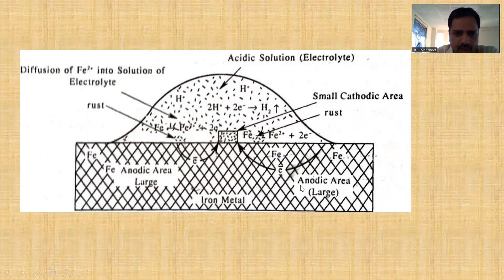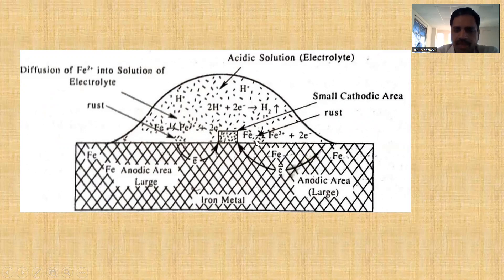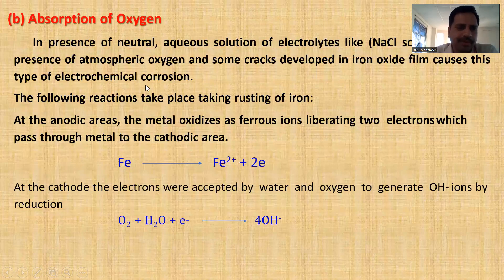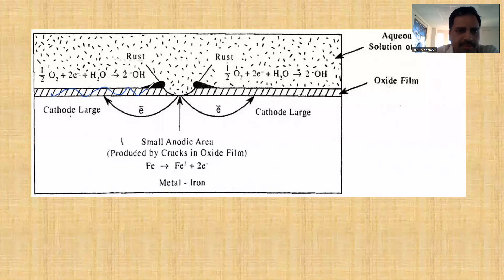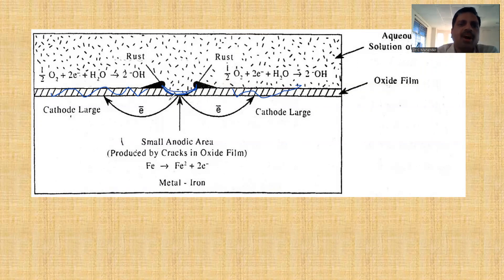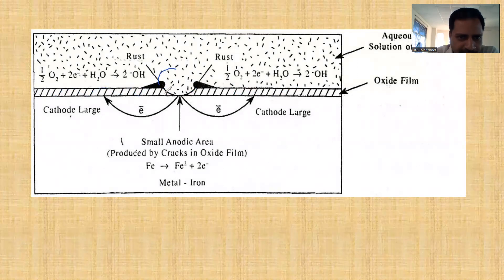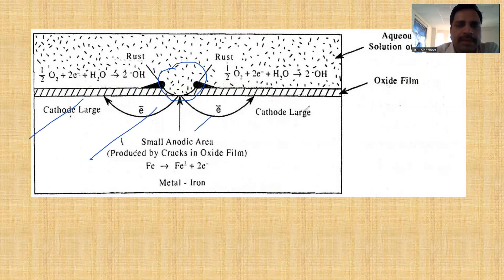We can see from the diagram: there is a small anode area and a large cathode area on the metal rod. For absorption of oxygen: when any metal is exposed to oxygen, there is a formation of a metal oxide layer. Where the metal oxide layer is not formed, or the formed metal oxide layer is removed, that part will act as anode. The remaining part of the metal will act as cathode.